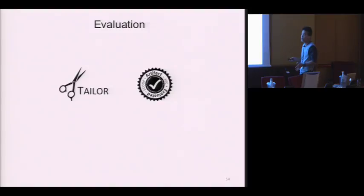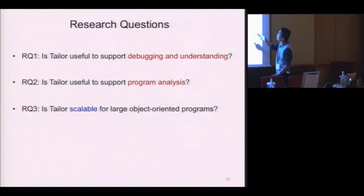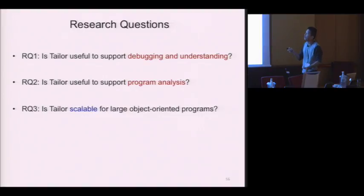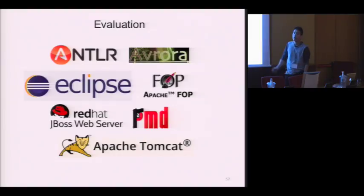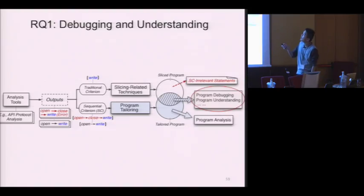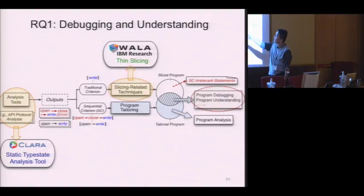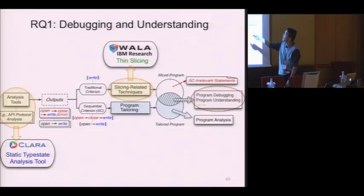Now let's see how Tailor behaves in the real world. The research questions in our evaluation correspond to the application diagram. First, we examine whether Tailor is useful to support debugging and understanding tasks in practice. Then we see whether Tailor is useful to support program analysis. Finally, we check whether Tailor is scalable for large OO programs. We evaluate Tailor using large real-world Java applications rather than benchmarks, and we select seven large Java applications. Let's see the first case study.